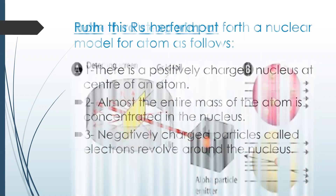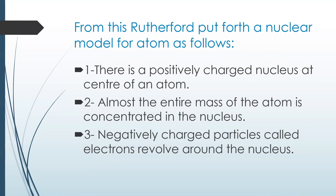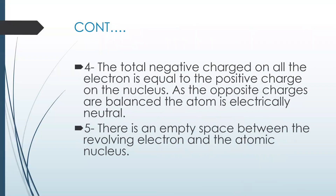From this, Rutherford put forth a nuclear model for atom. One: there is a positively charged nucleus at the center of an atom. Two: almost the entire mass of the atom is concentrated in the nucleus. Three: negatively charged particles, or electrons, revolve around the nucleus. Four: the total negative charge on all the electrons is equal to the positive charge on the nucleus — as the opposite charges are balanced, the atom is electrically neutral. Five: there is an empty space between the revolving electrons and the atomic nucleus.